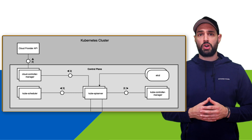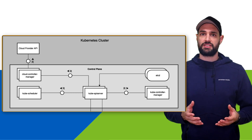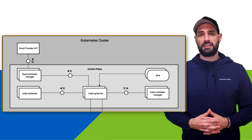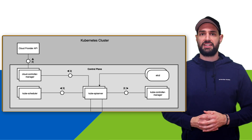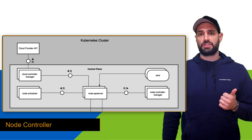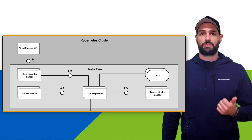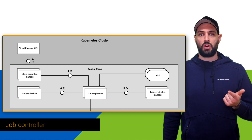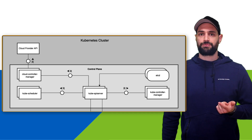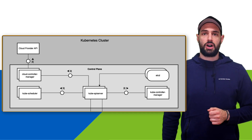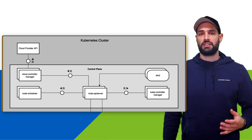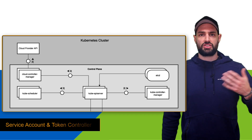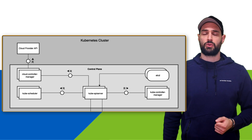Then we have the Kube controller manager, which is an aggregation of different controller processes compiled into one single binary. These controller processes take responsibilities within the cluster to control certain events. They can be divided into: the node controller, which watches the health of nodes and responds if one or many nodes shut down; the job controller, which watches job objects representing a single task, creates pods to fulfill such a task, and then terminates the pod after fulfillment; and the service account and token controller, for account management, creating default accounts and issuing API access tokens for new namespaces.